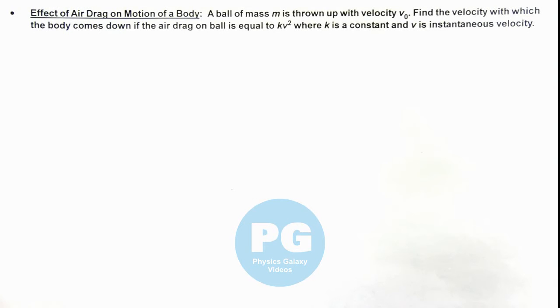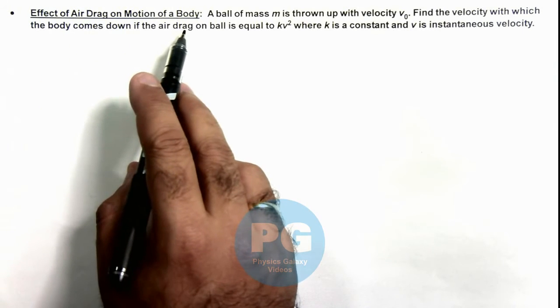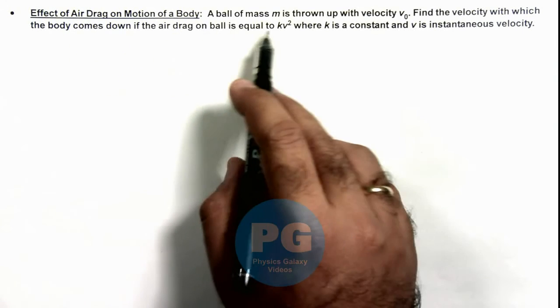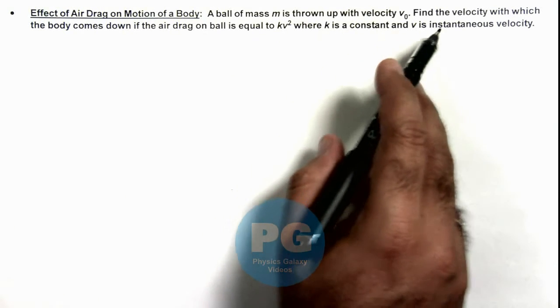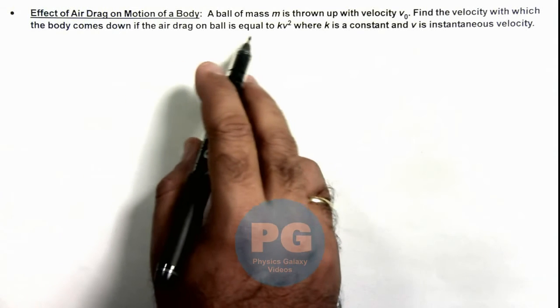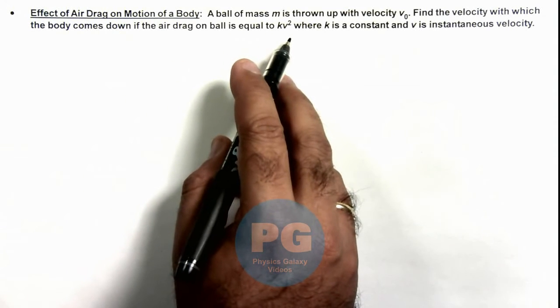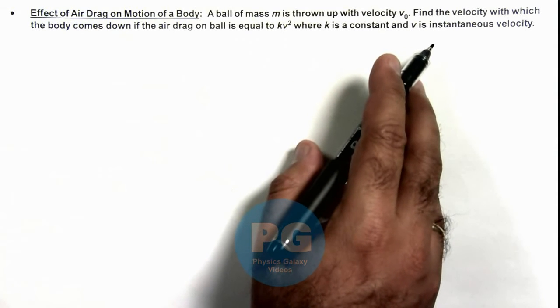In this illustration we'll discuss the effect of air drag on motion of a body. Here we are given that a ball of mass m is thrown up with a velocity v₀, and we are required to find the velocity with which the body comes down if air drag on ball is equal to kv², where k is a constant and v is the instantaneous velocity.